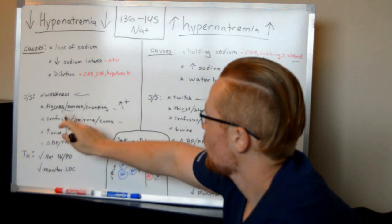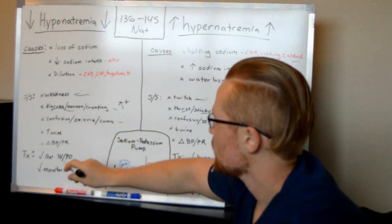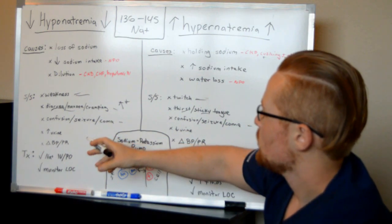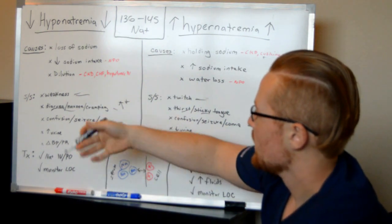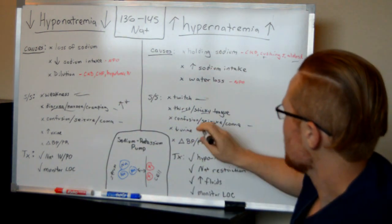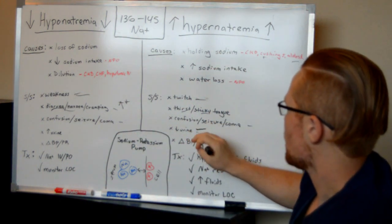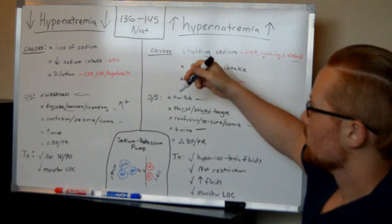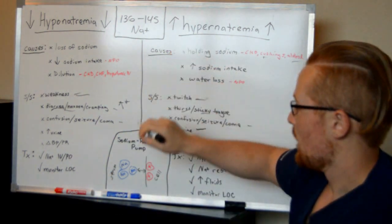You'll see with hyponatremia, you may have increased amount of urine, which is causing you to try to get rid of fluids so that your salt and water levels are better. Whereas with hypernatremia, you're holding onto urine in response to increase your fluid levels to balance out.